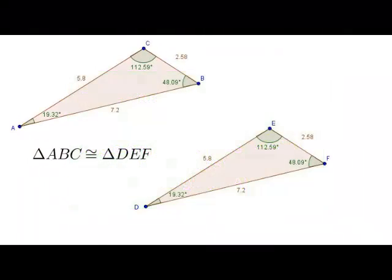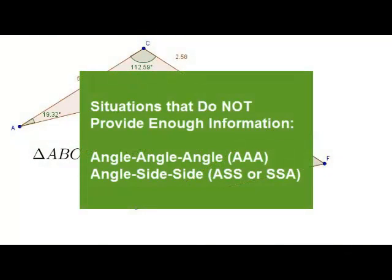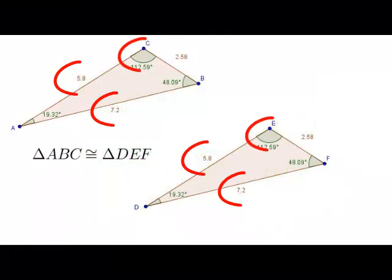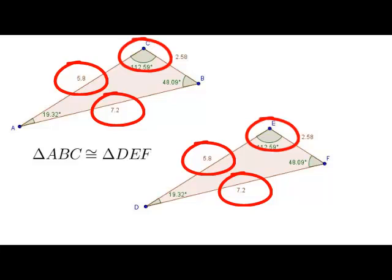But there are certain situations where the three pieces of information is just not enough to prove that two triangles are congruent. And one of these situations is the angle side-side situation. In other words, a situation where you know that two sides are congruent and you know that an angle is congruent but it just so happens to not be the included angle.